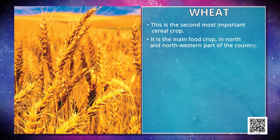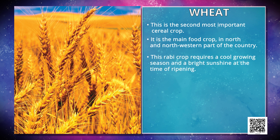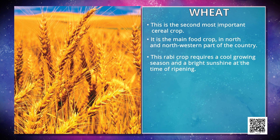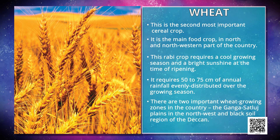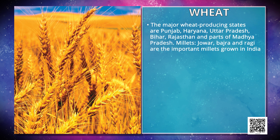After rice, we talk about wheat. This is the second most important cereal crop and the main food crop in the north and northwestern part of the country. This Rabi crop requires a cool growing season and bright sunshine at the time of ripening. It requires 50 to 75 cm of annual rainfall evenly distributed over the growing season. There are two important wheat-growing zones: the Ganga-Sutlej plains in the northwest and the black soil region of the Deccan. The major wheat-producing states are Punjab, Haryana, Uttar Pradesh, Bihar, Rajasthan and parts of Madhya Pradesh.